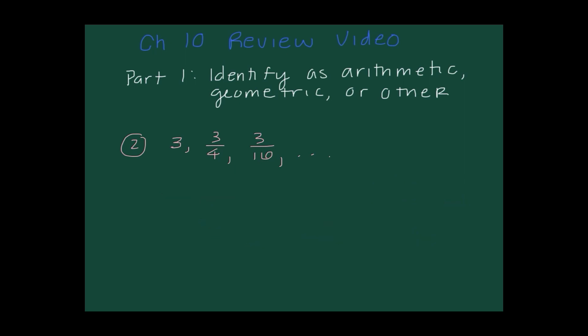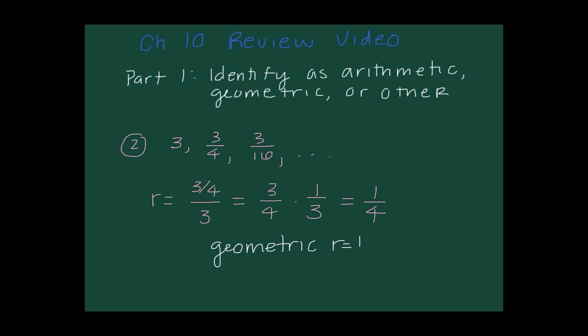Next I'll check if it's geometric. Any term divided by the previous term gives the common ratio. Three-fourths divided by three is like multiplying by one-third, giving a ratio of one-fourth. Three times one-fourth is three-fourths, and three-fourths times one-fourth is three-sixteenths. So this is indeed geometric, and I'll write geometric with r equals one-fourth.